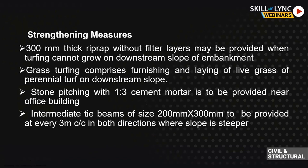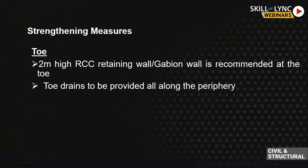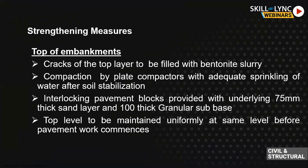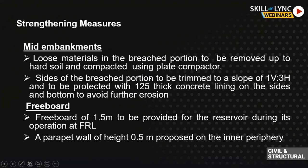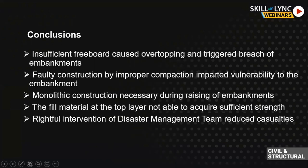We also proposed 300 mm thick capping with grass turfing and stone pitching. Where locally steeper slopes existed, tie beams and toe walls were proposed. A toe drain with gabion wall was suggested to arrest future seepage. Cracks at the top of the embankment were to be filled with bentonite slurry, with proper compaction and interlocking pavement blocks. For mid-embankments, loose materials were to be removed, slopes trimmed to 1V:3H, and protected with concrete lining. Freeboard was calculated as 1.5 meters per Indian Standard.